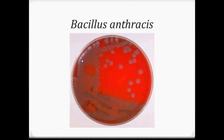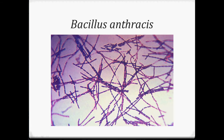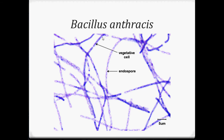This is Bacillus anthracis colonies. Under microscopic view, you can see that the endospore occupies a large volume of cytoplasmic space.